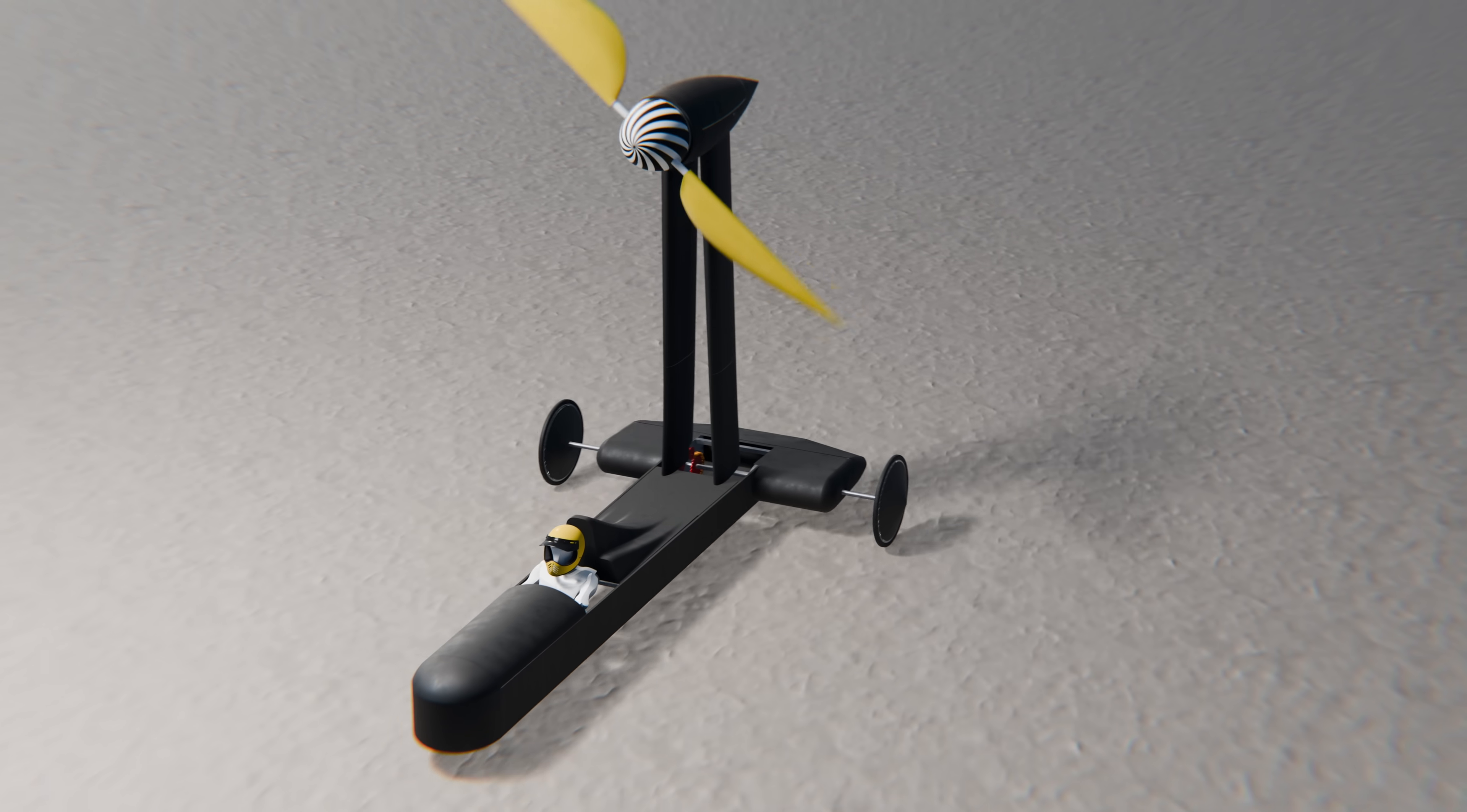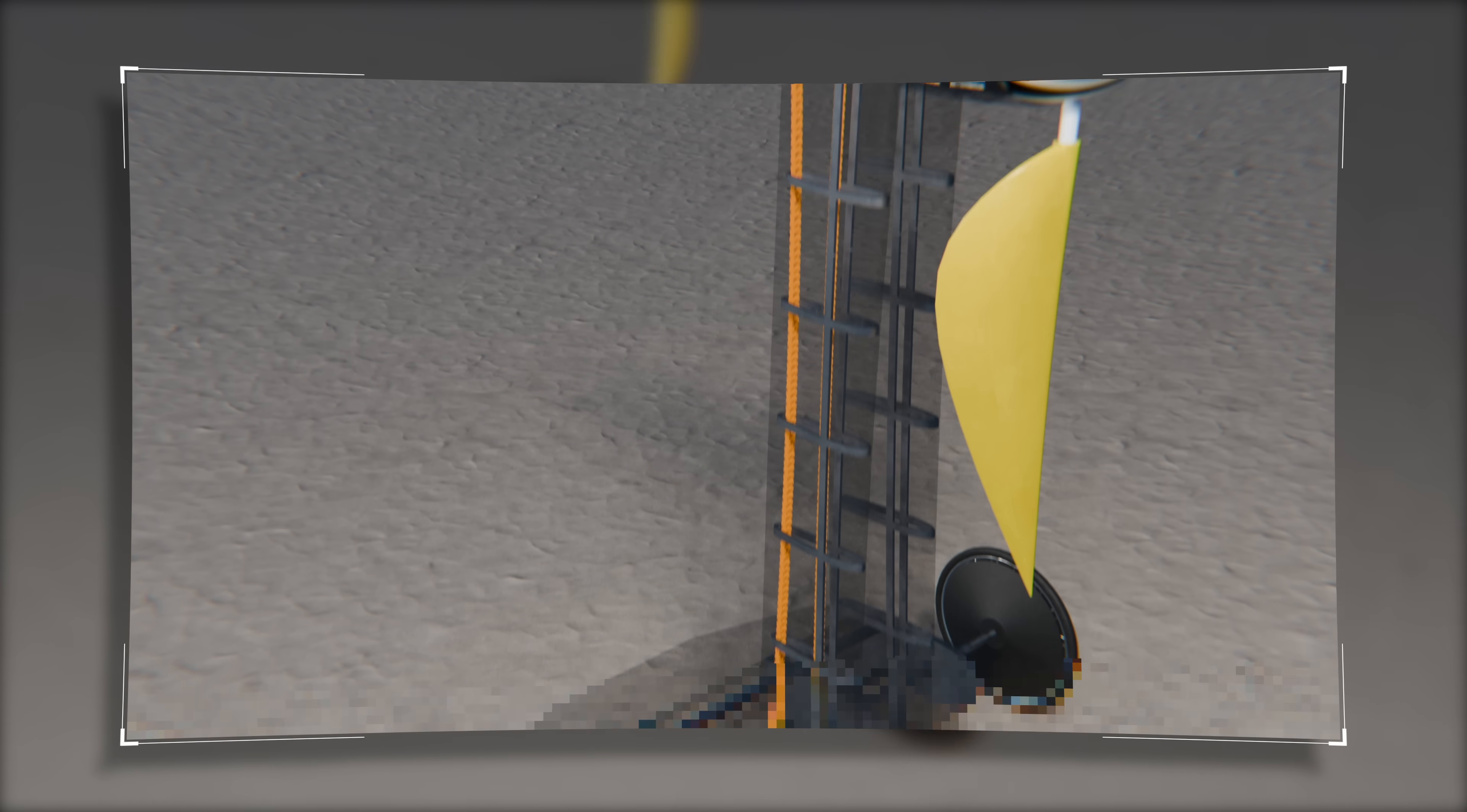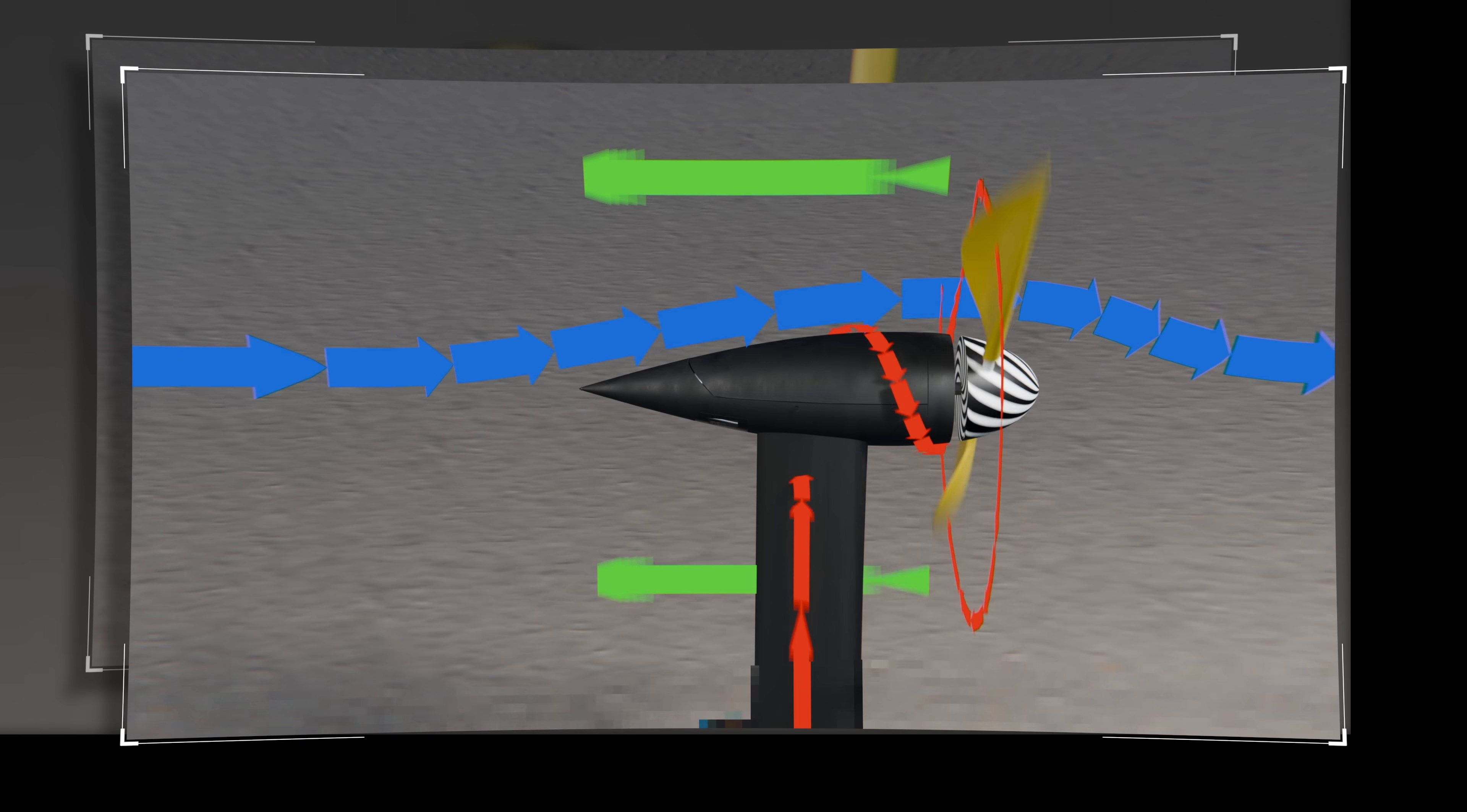Another trap is thinking of the propeller as a passive sail. It's not. It's actively driven by the wheels, which are in contact with the ground. This is where the energy comes from. The rolling resistance against the ground turns the propeller, which pushes air backwards and propels the car forward.